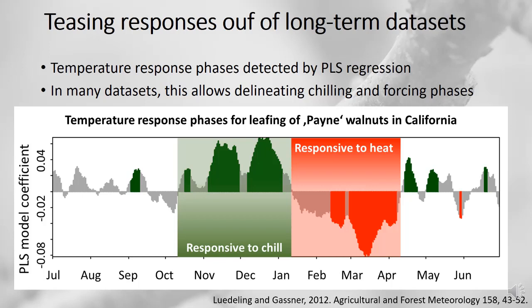We've adopted methods from machine learning and big data analysis that are routinely applied in hyperspectral remote sensing. I got inspired and adopted this PLS regression for this type of analysis, and it's worked pretty well. Basically what it gives us is model coefficients for each day of the year, shown in a diagram based on mean daily temperatures.